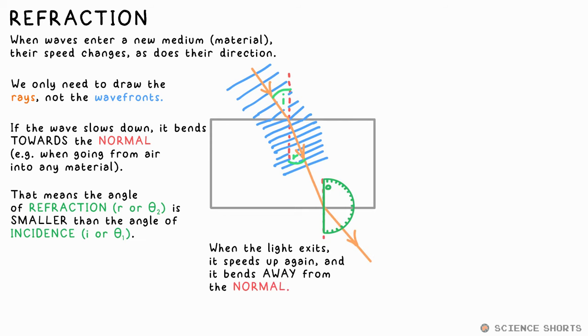How much a medium refracts light is determined by its refractive index, symbol N. It's just a ratio that's equal to the speed of light in a vacuum, basically the same for air, divided by the speed of light in the medium. So it will be a number that's always greater than 1.